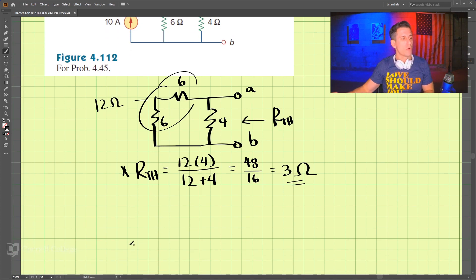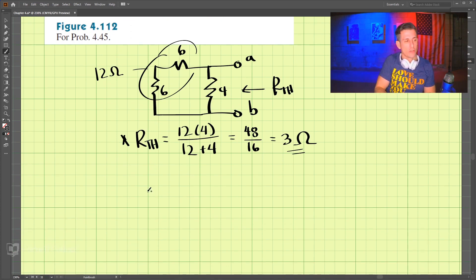So we turn the power supply back on, the current source, turn that back on. And we have 10 amps. And we have 6 and 6 and 4.